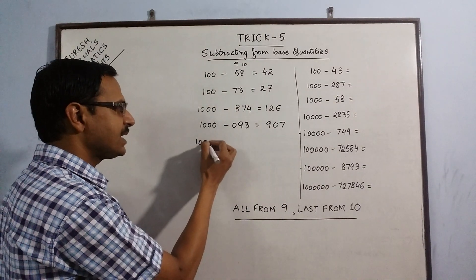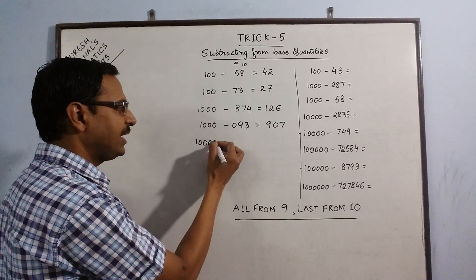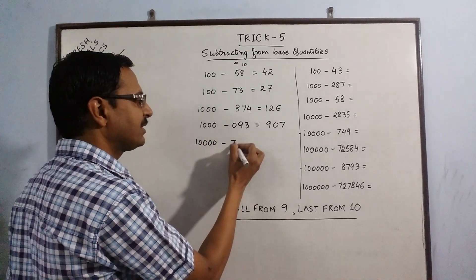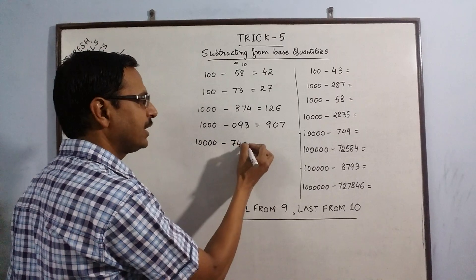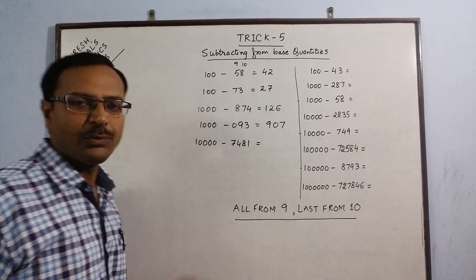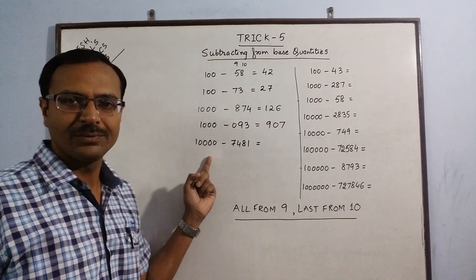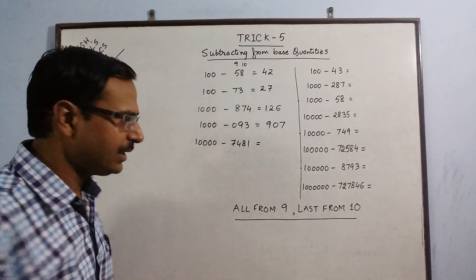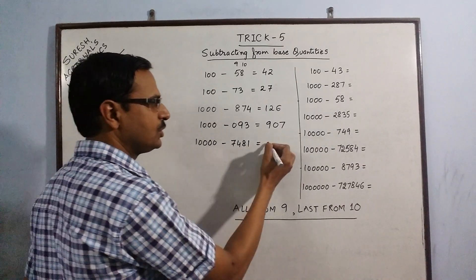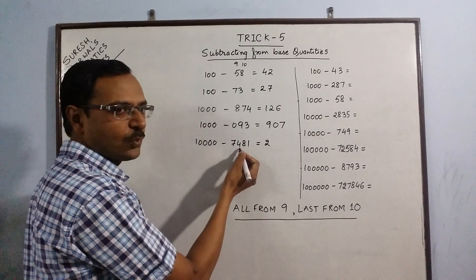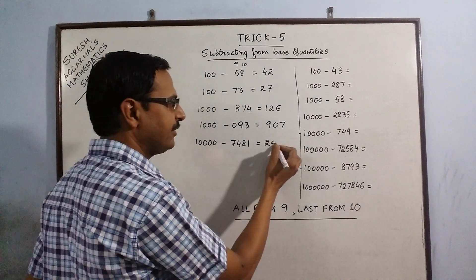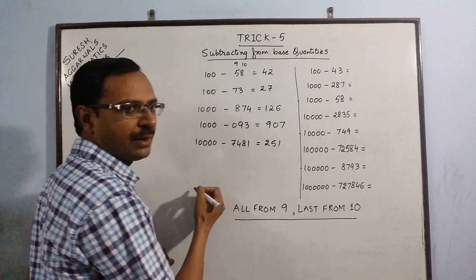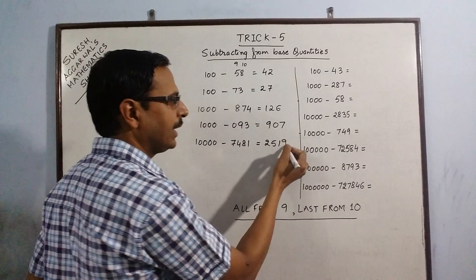Say we have 10000 and we need to subtract 7481. That's 4 zeros and 4 digits, so we can apply the rule directly: 9 minus 7 is 2, 9 minus 4 is 5, 9 minus 8 is 1, and 10 minus 1 is 9. So the answer is 2519.